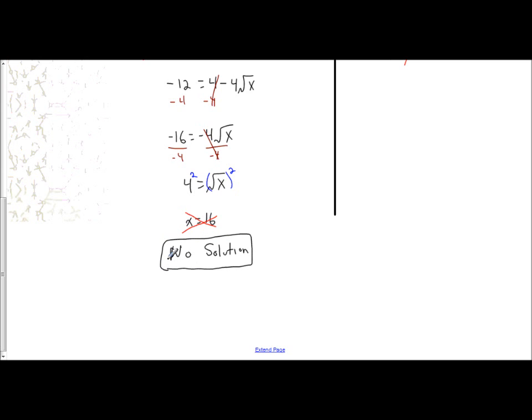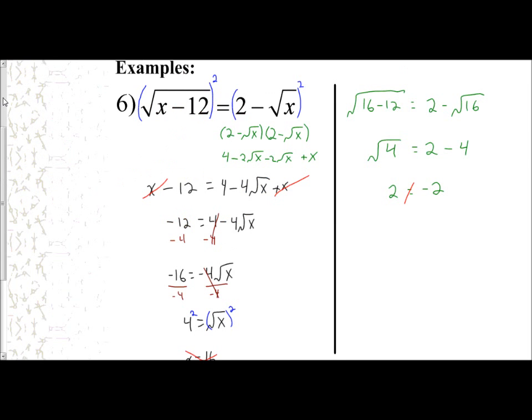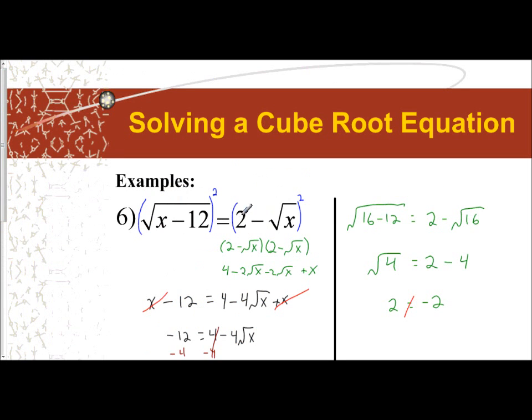In this video, we focused on examples that actually involved squaring a binomial expression in order to eliminate the radical. The two radicals were moved to opposite sides, with a constant there that we had to take into consideration when squaring. These are more complicated problems, and you can move on to the next two examples when you understand this.